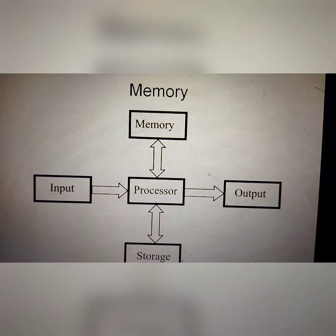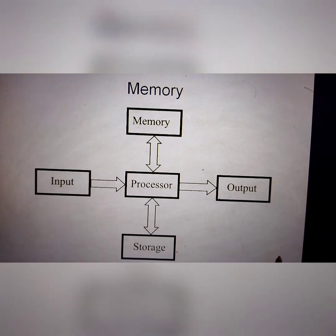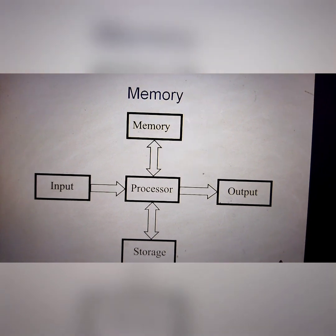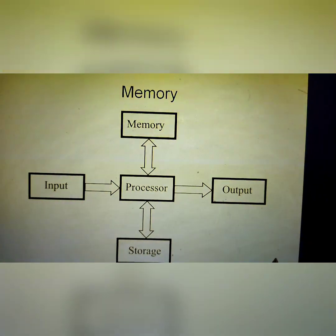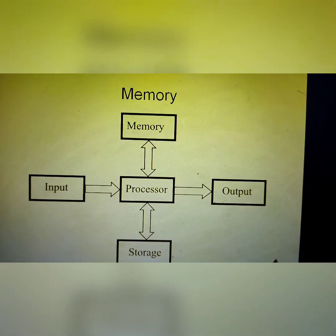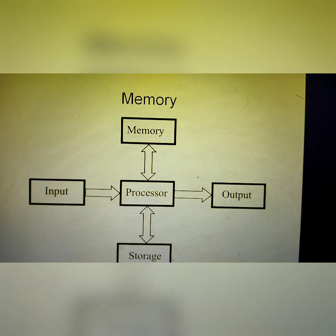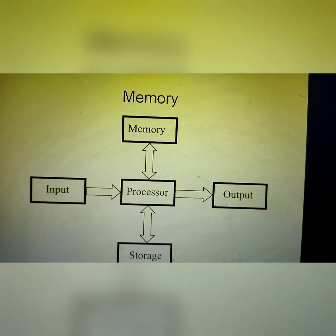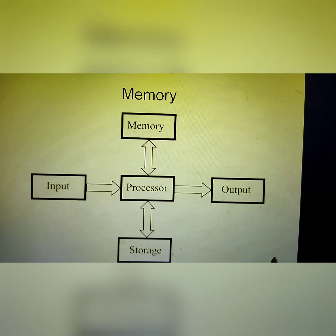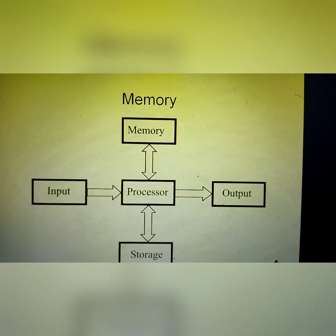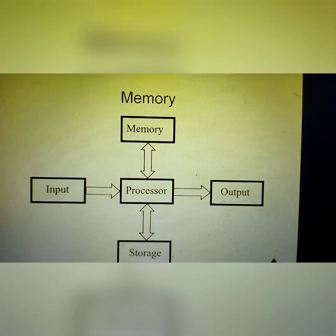Now see the process flow of memory. First is Memory, then this processes its function, then Input — you enter the input data — and after that Output data, and lastly Storage. So this is a chart of memory.